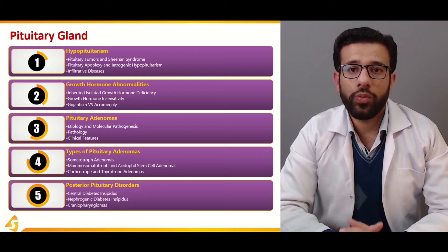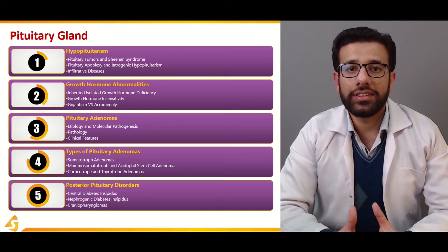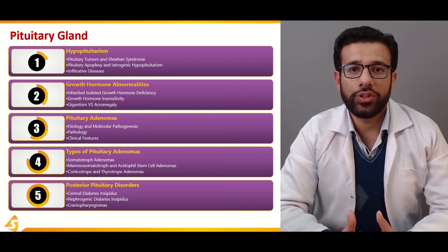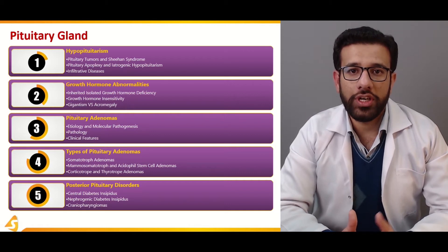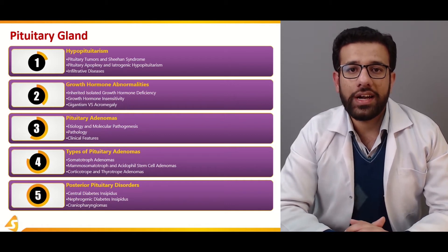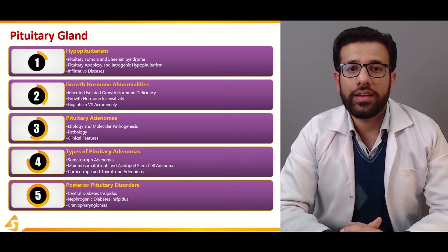Section one comprises of hypopituitarism, which means that the pituitary gland secretes certain hormones and these hormones are deficient — one or two hormones are deficient — which are manifesting the clinical symptoms in the patient.